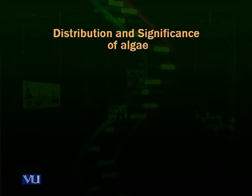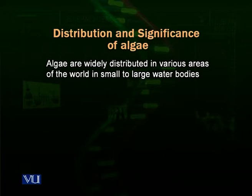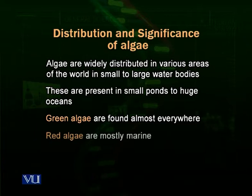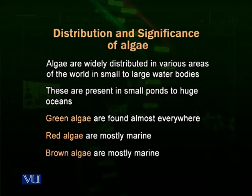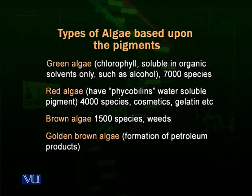Algae are widely distributed all over the world. Green algae are the most abundant form of algae on Earth, present in almost all types of water bodies. Red algae are mostly distributed in marine waters, and brown algae are also mainly found in marine waters. Golden algae are almost exclusively marine, present in the waters of oceans.